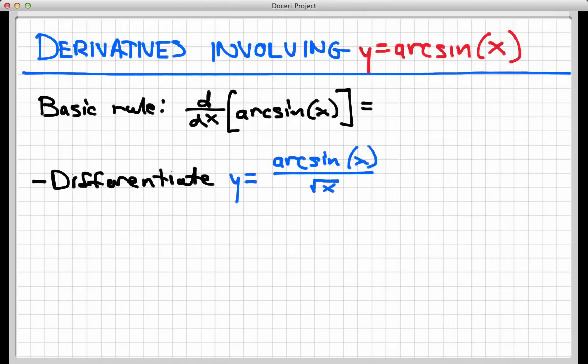So first of all, let's remind ourselves of the basic rule about the derivative of arc sine of x, and that is that the derivative with respect to x of arc sine x is 1 over the square root of 1 minus x squared.